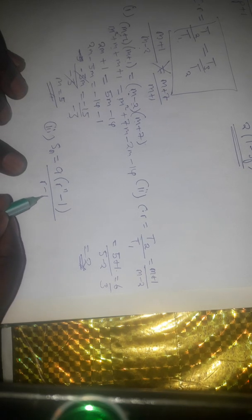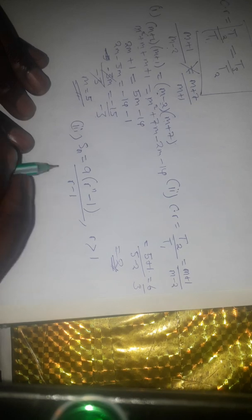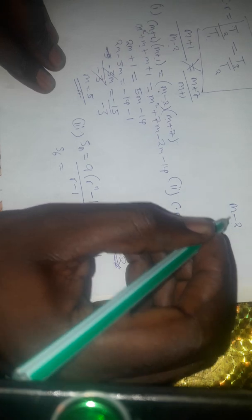Quickly going to the third part, which is asking us to find the sum of the first six terms. The sum formula is S equals A times (R to the power N minus 1) divided by (R minus 1). We use this formula when R is greater than 1. Our value of A is the first term, which is m minus 2. Since m equals 5, the first term is 5 minus 2, which comes to 3. So our first term A equals 3.